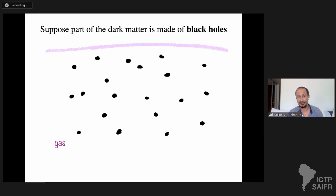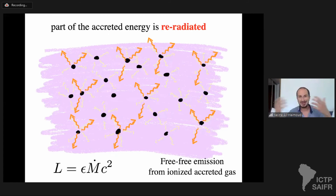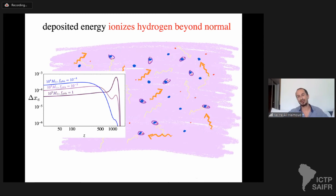A similar aspect applies to primordial black holes as dark matter candidates. These black holes accrete surrounding gas in the early universe at rate m-dot; anything that accretes will re-radiate part of the accreted rest mass, so you need to determine the luminosity — the efficiency of radiation — and then the efficiency with which this additional radiation is deposited into the plasma. This additional radiation ionizes and heats up the hydrogen gas beyond the standard history, changing the free electron fraction.